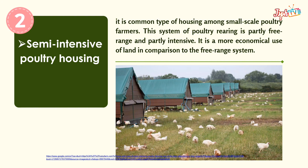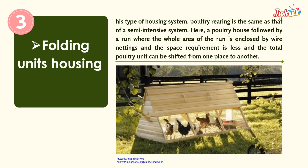Second, the semi-intensive poultry housing. It is a common type of housing among small-scale poultry farmers. This system of poultry rearing is partly free-range and partly intensive. It is a more economical use of land in comparison to the free-range system.